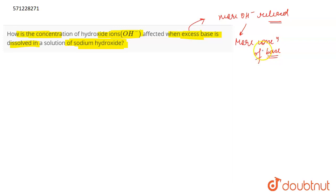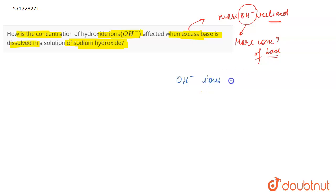If you add more and more base, the concentration of OH⁻ ions is going to increase in the solution, and the solution is going to become more and more basic because more OH⁻ ions are released. In a given amount of solution, the concentration of OH⁻ ions is increasing because OH⁻ ions per unit volume are increasing.